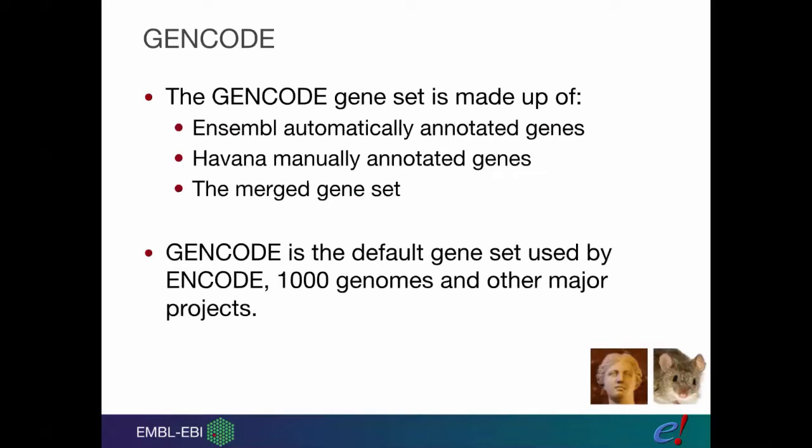Just to confuse everyone with terminology, there is a project called GENCODE. GENCODE is made up of the Ensembl genes—the Ensembl automatically annotated genes and the Havana manually annotated genes and the merged gene set. This is only for human and mouse. These genes undergo an extra level of quality control. Because of the high quality nature of this gene set, it's the default gene set used by major sequencing projects such as ENCODE, 1000 Genomes, NOMAD, GTEX, and other such projects.